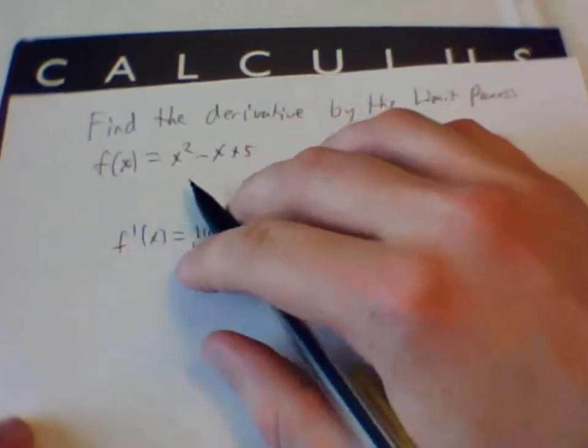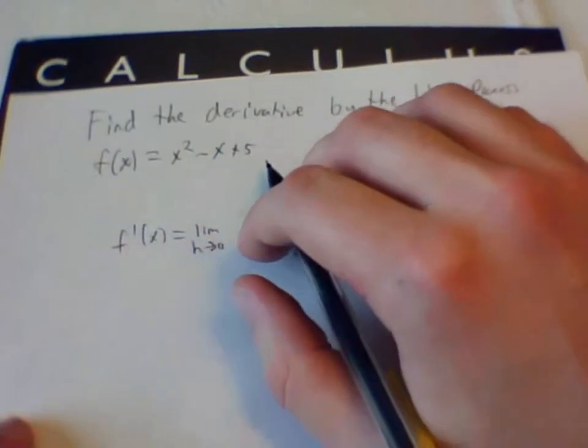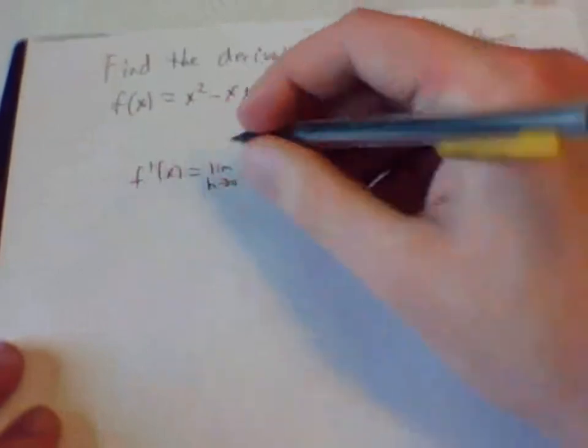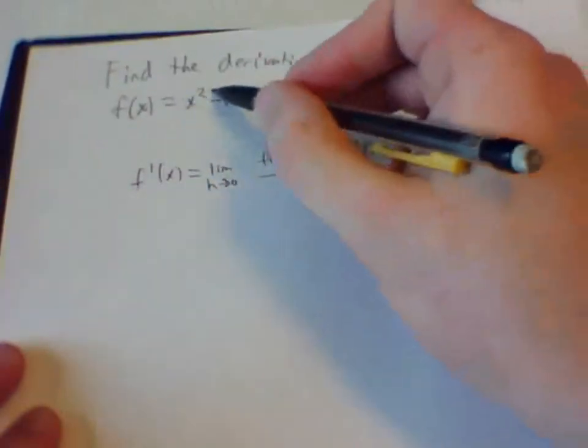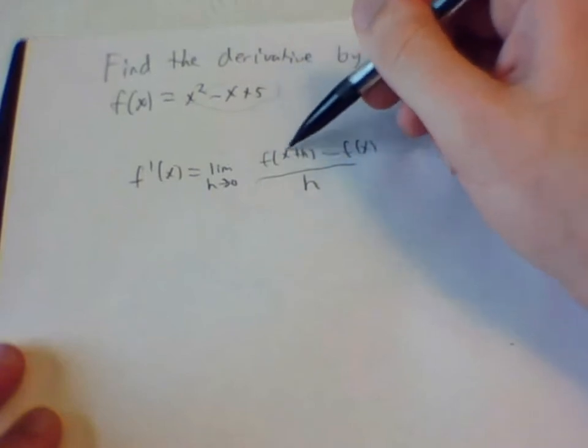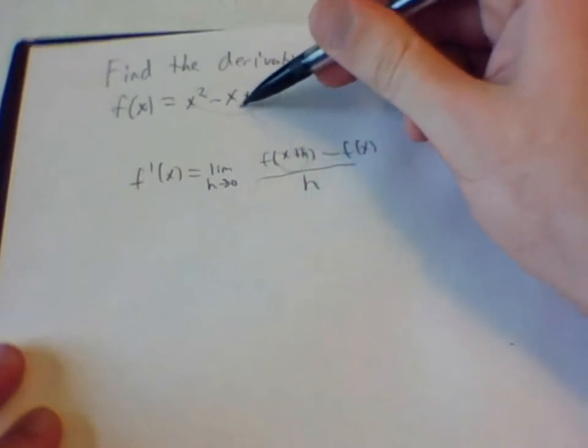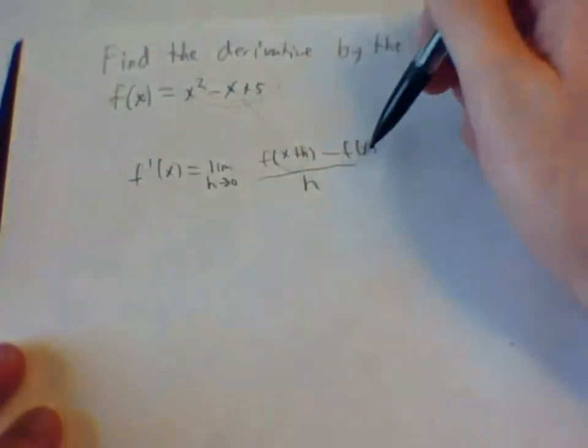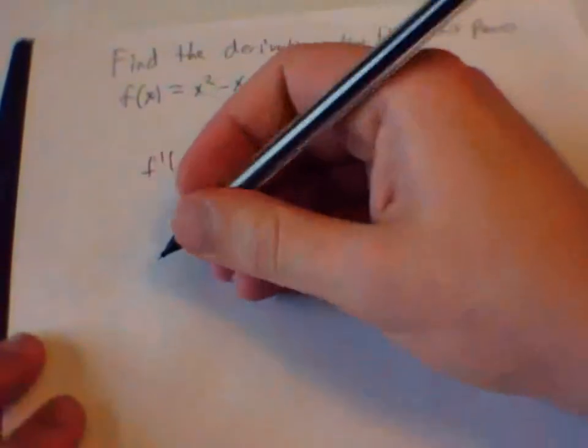So now we have the equation f of x equals x squared minus x plus 5. So we are going to have to plug that in. We take this and we plug it in there to each one of those x's and we take that and we plug it into there. So it is going to look like this.